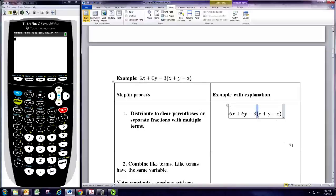So, take the negative 3, and think of this subtraction as making that a negative 3. Negative 3 times x is negative 3x. Negative 3 times y is negative 3y. And then negative 3 and negative z gives you a positive 3z.